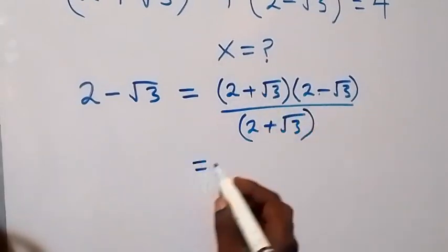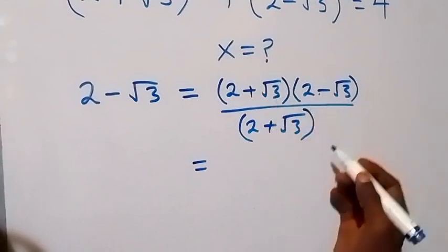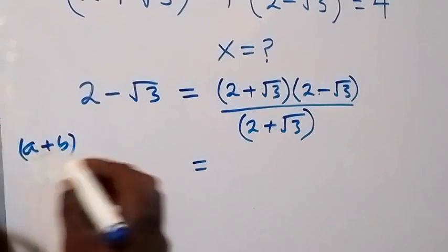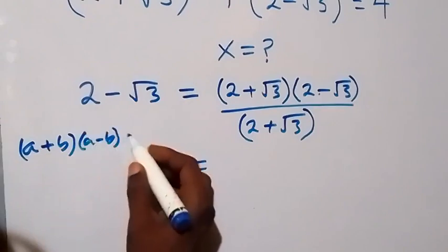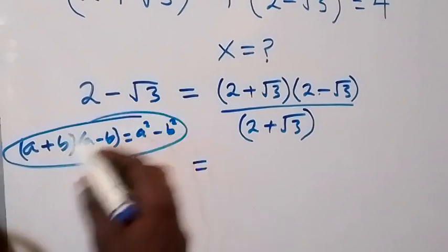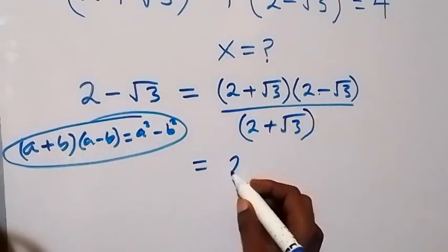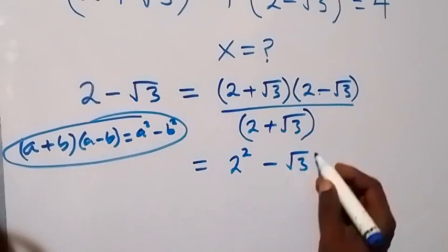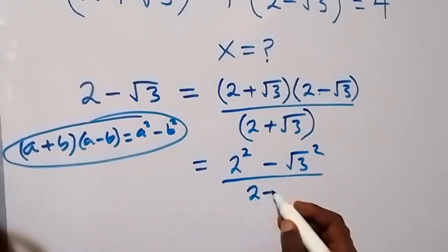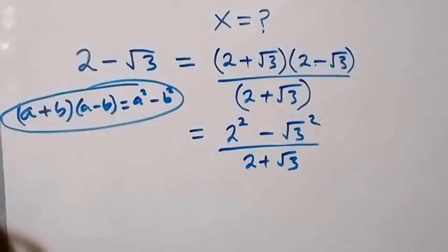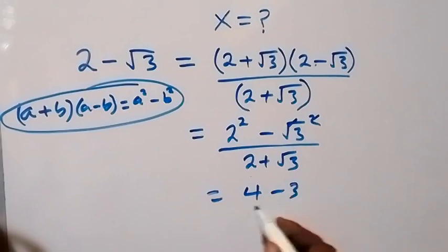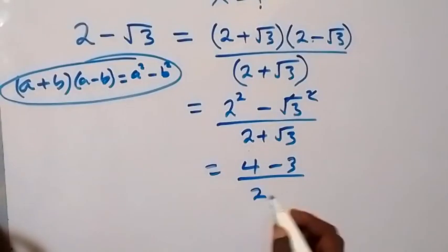Let's multiply what we have here using the conjugate and the difference of two squares: when we have (a + b)(a - b), this is simply a squared minus b squared. Applying this to the numerator, this becomes 2 squared minus √3 squared, over 2 plus √3, which gives us 4 minus 3 over 2 plus √3.